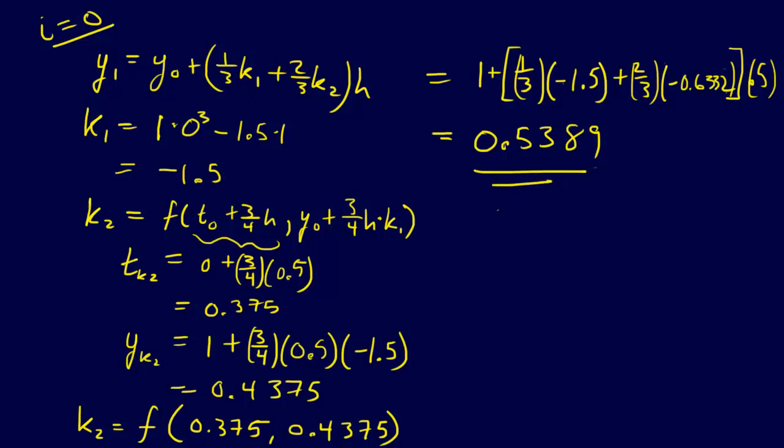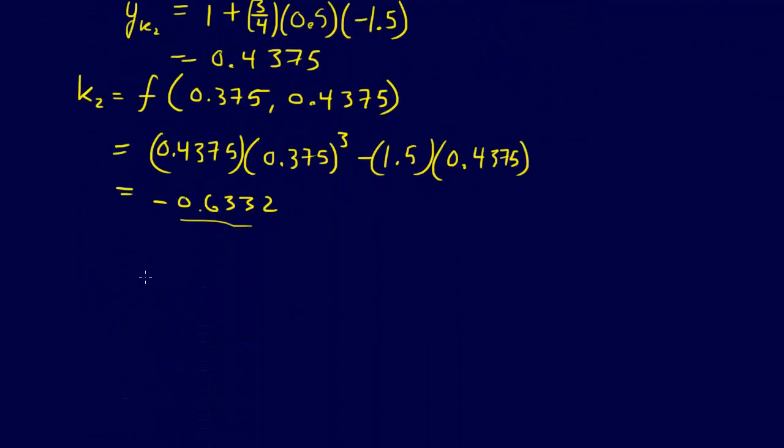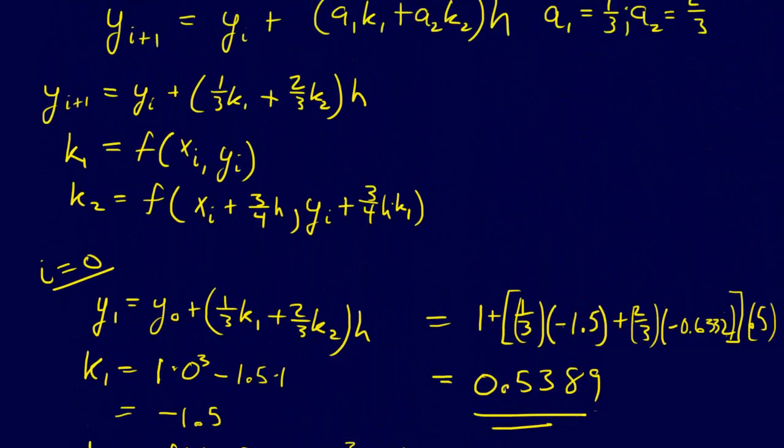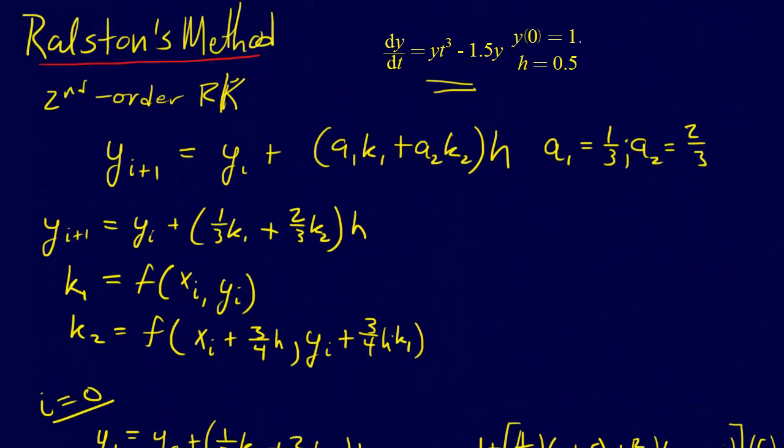So that is our Y_1, and then, of course, we could go on, and we would say, i equals 1, so we have Y_2 equals Y_1 plus 1/3 K_1 plus 2/3 K_2 times H, and on and on and on. Okay, so there we go, and that is at least one step of Ralston's method, second order Runge-Kutta method.